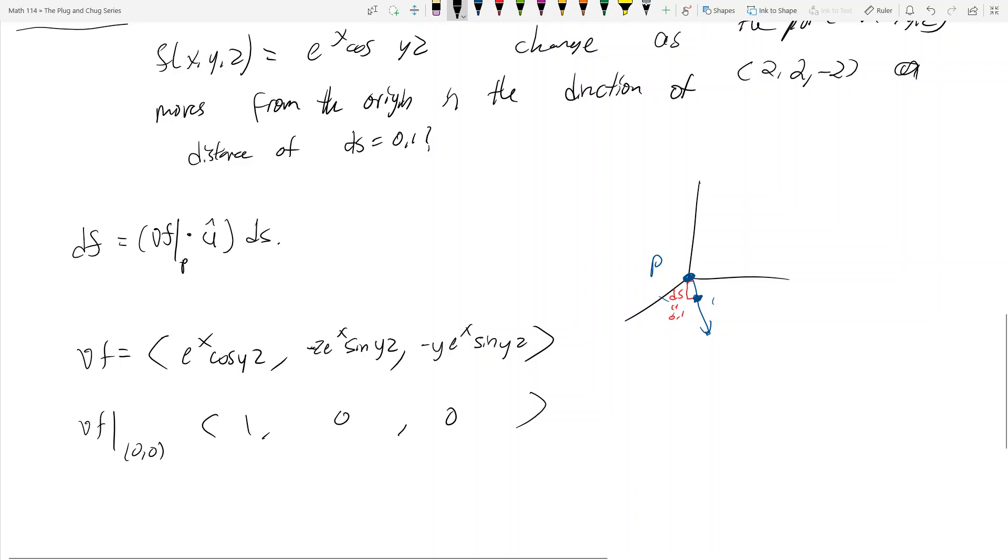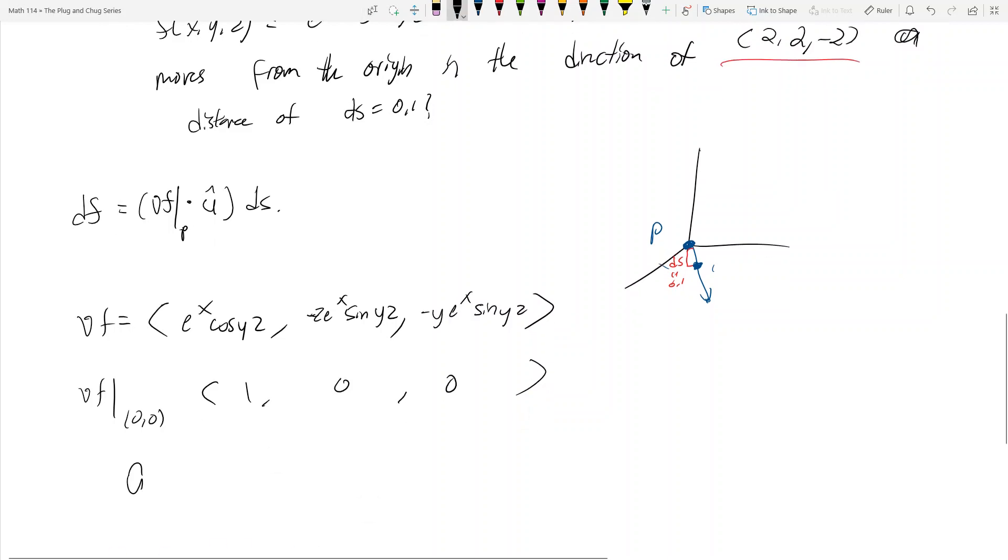Now what? Now we've got dotted with u hat. Well, here's the direction we want to go in. So what is u hat? Then u hat is equal to 2, 2, negative 2 divided by the magnitude. So that's 4 plus 4 plus 4, the square root of that. And this gets me, bottom's 12, so it's 1 root 3, 1 root 3, negative 1 over root 3.